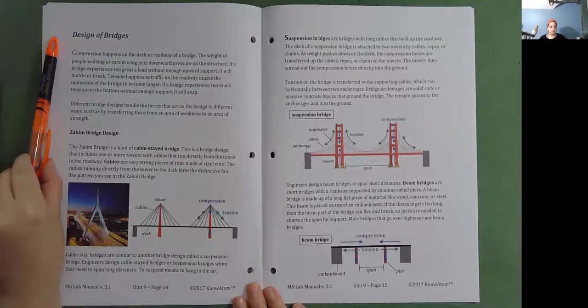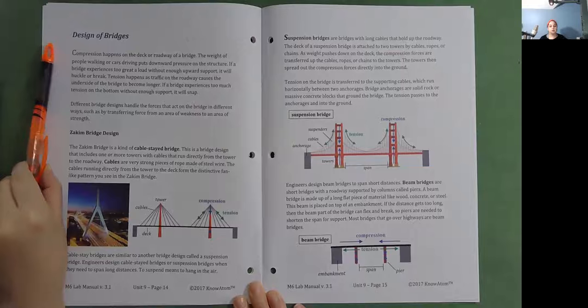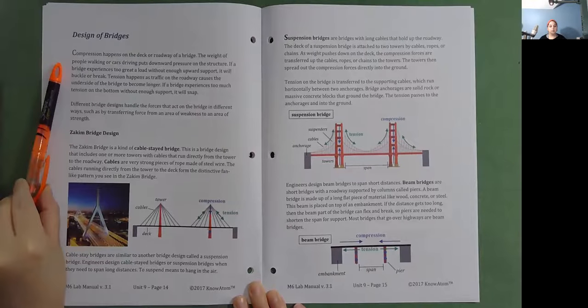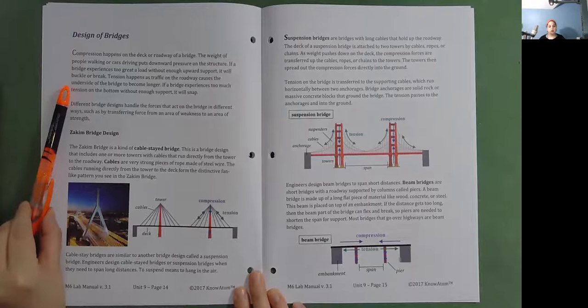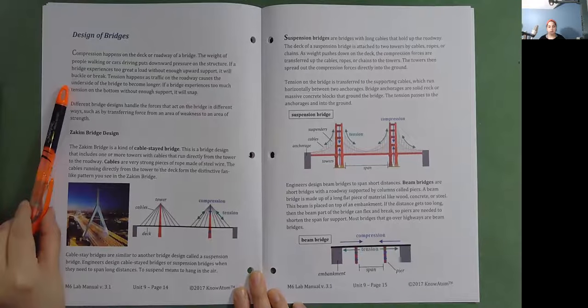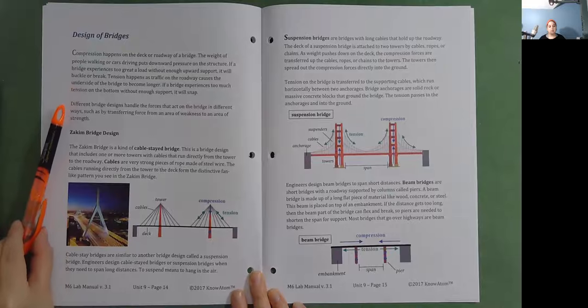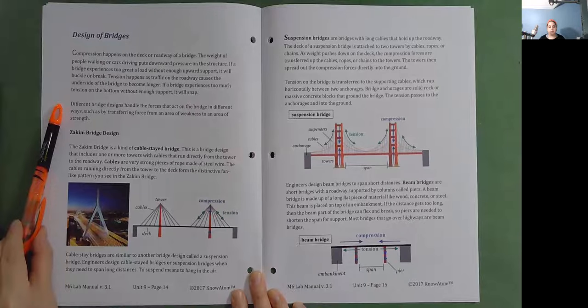Design of Bridges. Compression happens on the deck or roadway of a bridge. The weight of people walking or cars driving puts downward pressure on the structure. If a bridge experiences too great a load without enough upward support, it will buckle or break. Tension happens as traffic on the roadway causes the underside of the bridge to become longer. If a bridge experiences too much tension on the bottom without enough support, it will snap. Different bridge designs handle the forces that act on the bridge in different ways, such as by transferring force from an area of weakness to an area of strength.